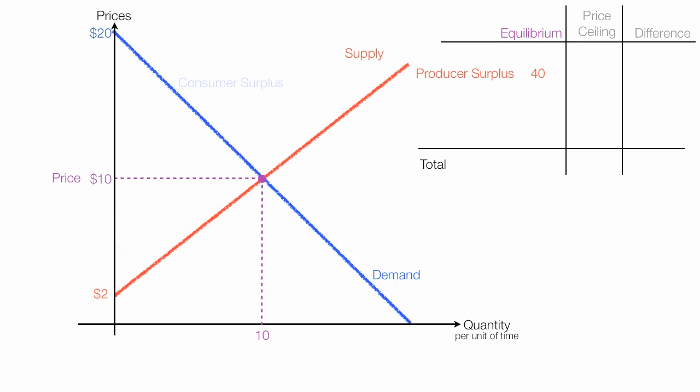Consumer surplus is the area below the demand curve and above price, or the area of this blue triangle. The area is 1/2 base times height, which is 1/2 times 10 times 10, and this equals 50. Consumer surplus at equilibrium is 50. The whole surplus of consumer surplus plus producer surplus is this area right here. I'll outline that in black, and that is the total surplus, which is 90.